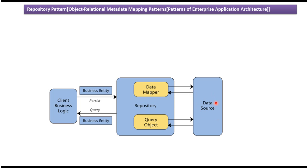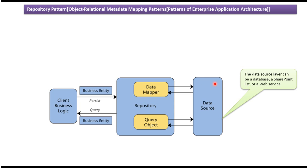Here you can see the Data Source Layer. The Data Source Layer can be a Database, a SharePoint List, or a Web Service. On the left side you can see the Client Business Logic, and in the middle you can see the Repository. The Repository acts as an intermediate layer between the Client Business Logic and the Data Source.